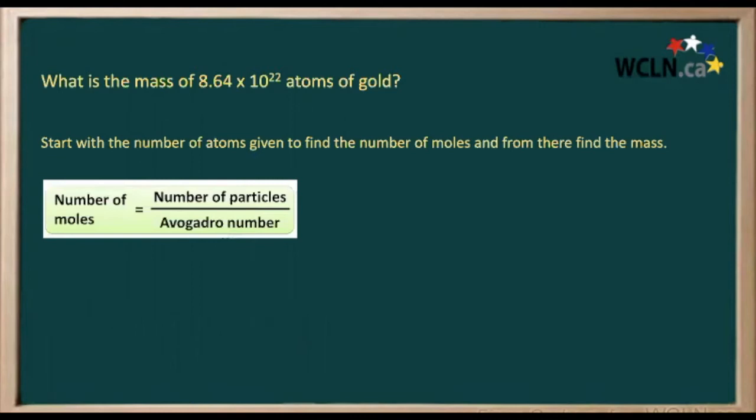So here's our formula for calculating our number of moles. We simply take the number of particles we have, which means the number of atoms that we have, and divide it by Avogadro's number, which is 6 times 10 to the 23. So if we divide that, we get approximately 0.144 moles of gold.